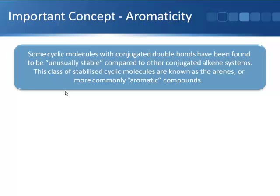Building on that, we think about aromaticity. Some cyclic molecules that contain conjugated double bonds have been found to be unusually stable compared to other conjugated alkene systems. This class of stabilized cyclic molecules are known as arenes, or more commonly, aromatic compounds.